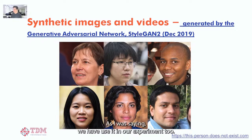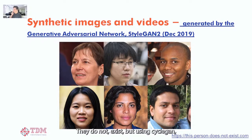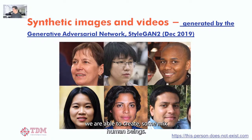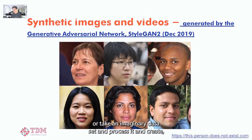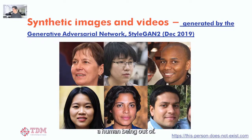Synthetic image generation: using Cycle GAN, we've created mixed human beings in our experiments — you can mix two human beings and create a third face, or take imaginary data and process it to create a human being. These people don't exist, but the technology generates them.